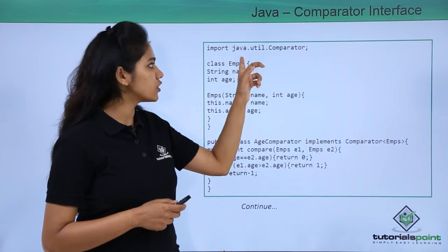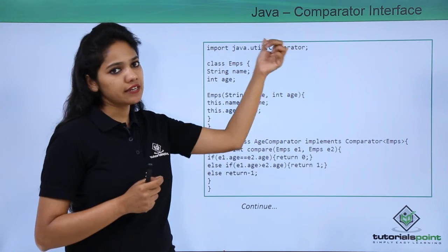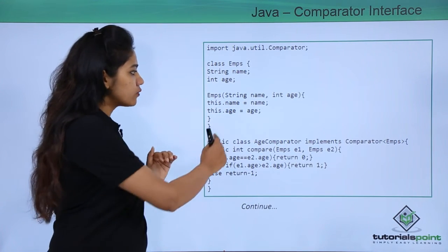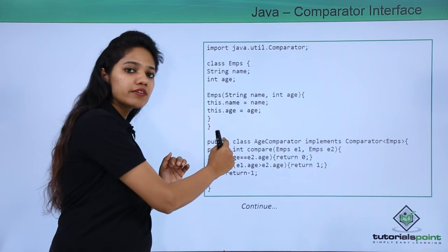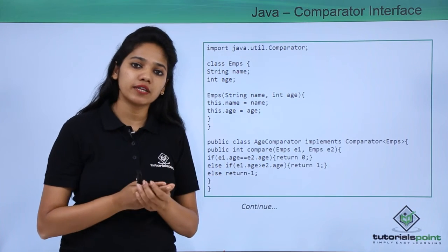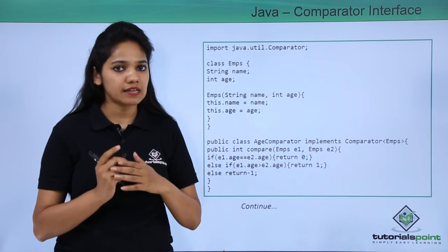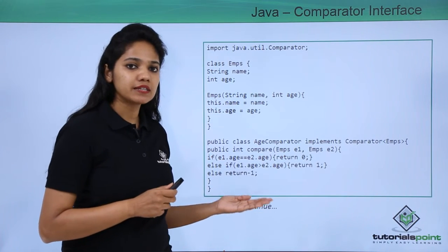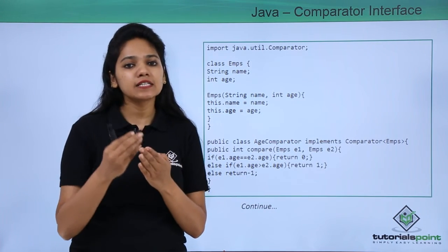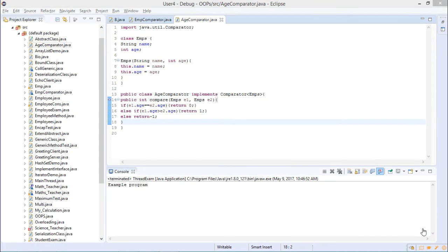Let us see with the help of an example. We have imported the java.util package, which contains the comparator interface. We create an employee class with certain variables, and the goal is to display the values of those variables in a particular order by comparing objects. Let us execute this program to understand how objects are compared and values displayed in order.